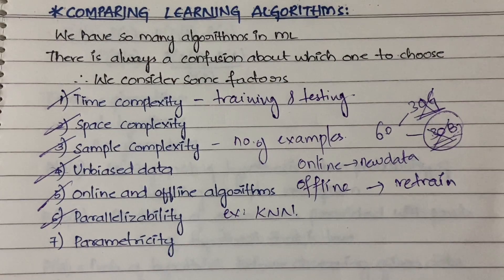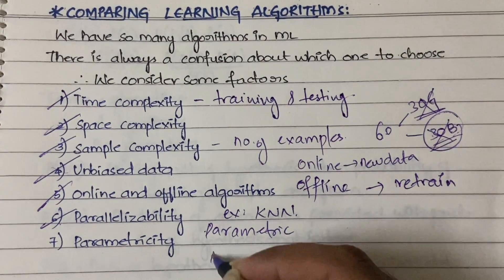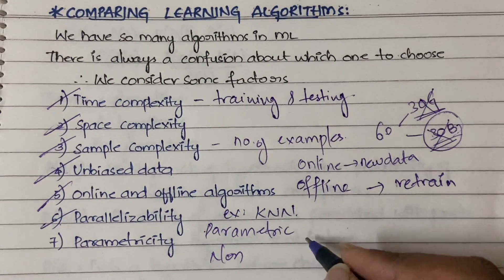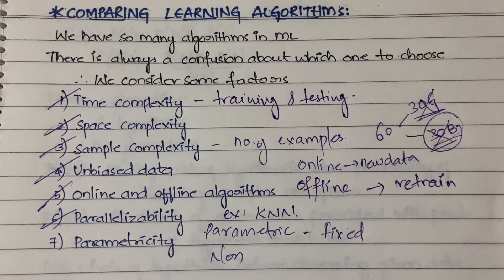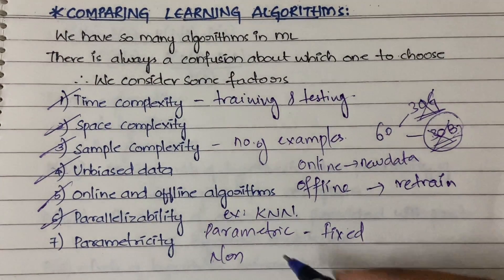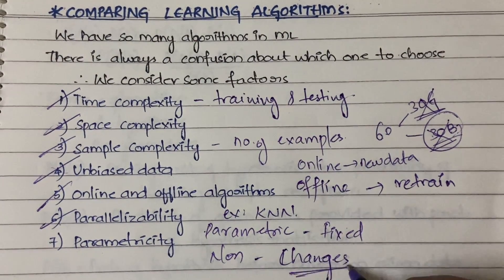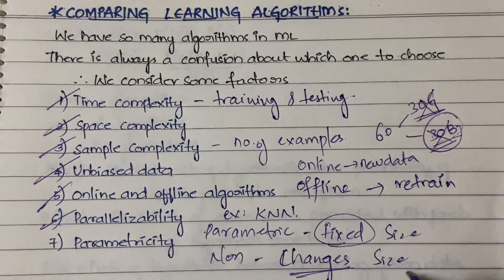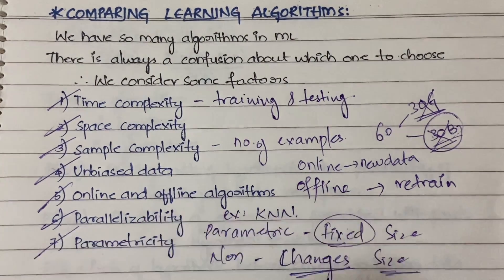The last factor is parametricity. In parametricity you have two things: parametric model and non-parametric model. In a parametric model, the number of parameters related to data are fixed — even when the size of the data grows, the number of parameters remains fixed. In a non-parametric model, the number of parameters changes with the size of the data.